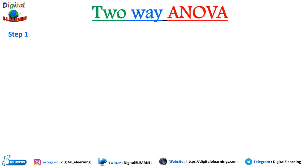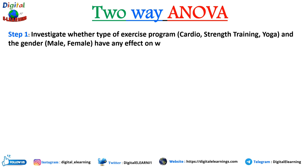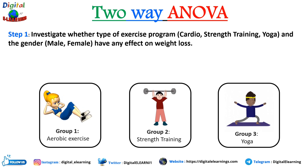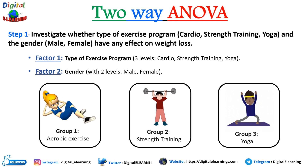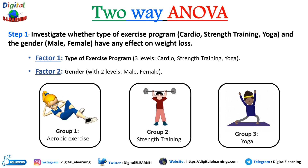Let us consider a scenario where we investigate how different exercise programs affect weight loss. We want to know if different types of exercise programs — cardio, strength training, or yoga — and gender have any effect on weight loss. In two-way ANOVA, we have two factors: the type of exercise program with three levels (cardio, strength training, yoga) and gender with two levels (male and female). Our goal is to determine if different exercise programs lead to different weight loss outcomes, if there is a difference between male and female, and if the effect of exercise program on weight loss differs by gender.